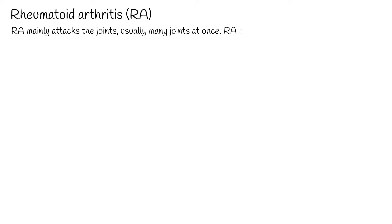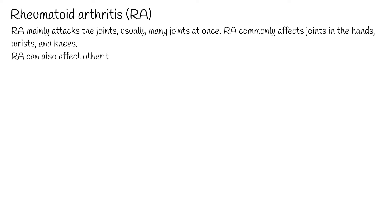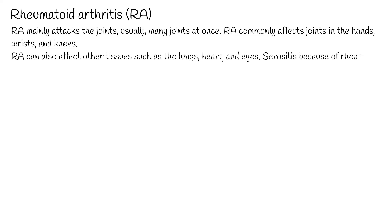Rheumatoid arthritis (RA) is an autoimmune and inflammatory disease that mainly attacks the joints, usually many joints at once. RA commonly affects joints in the hands, wrists, and knees. In a joint with RA, the lining becomes inflamed, causing damage to joint tissue. RA can also affect other tissues and cause problems in organs such as the lungs, heart, and eyes. Serositis due to rheumatoid arthritis is not very common.